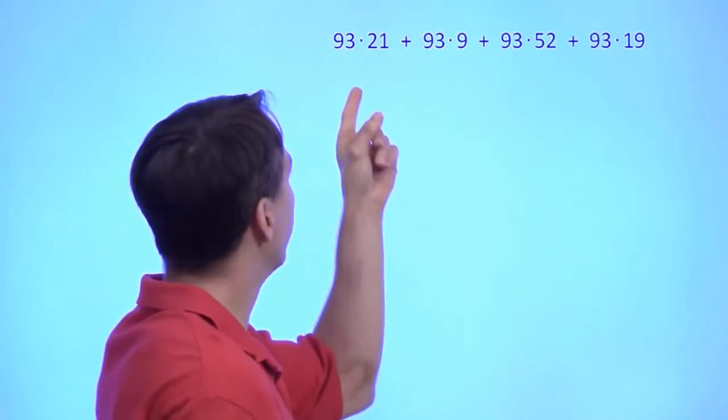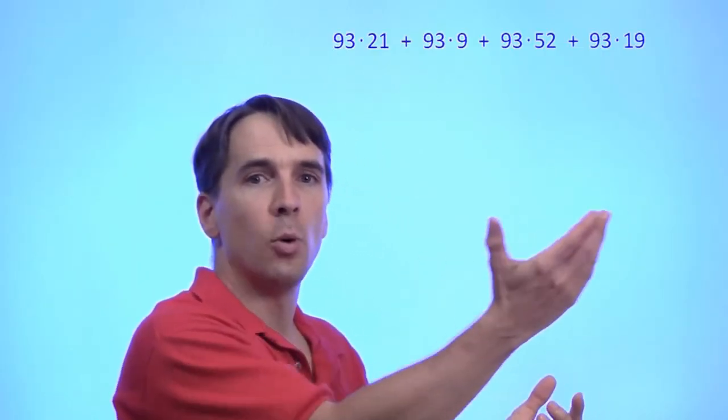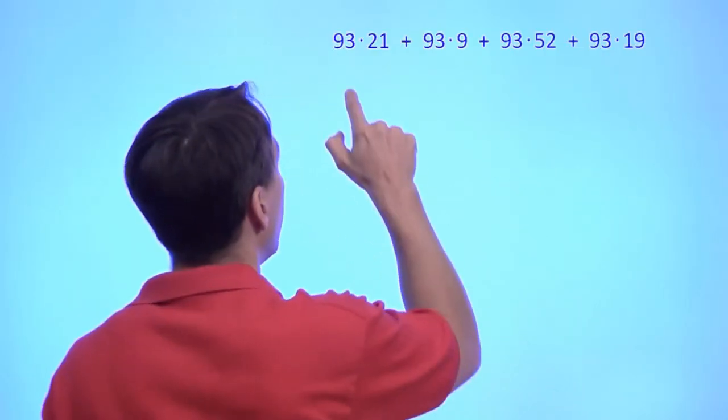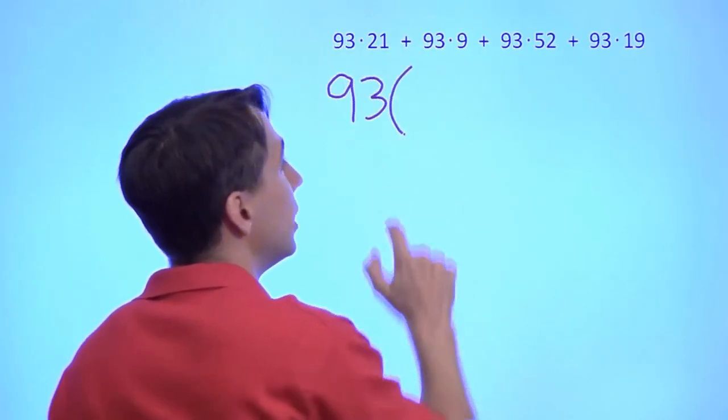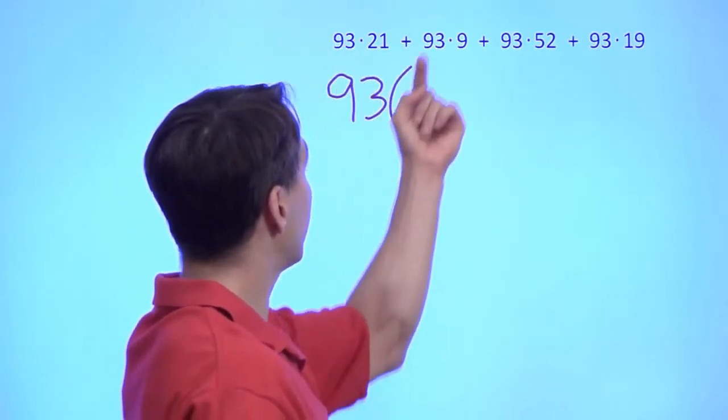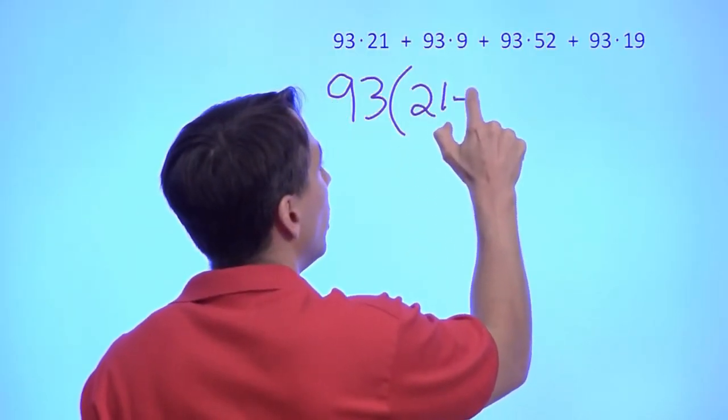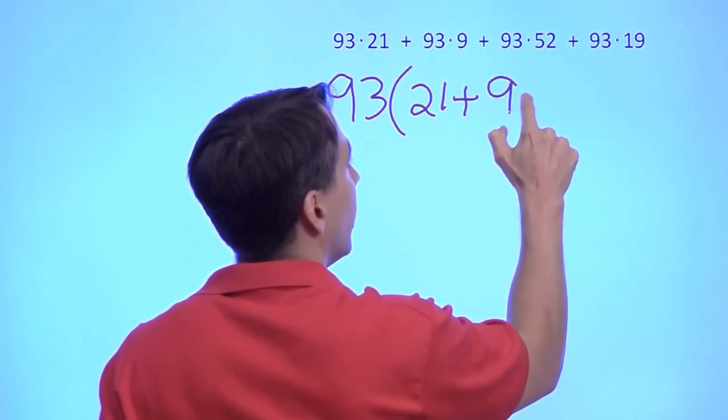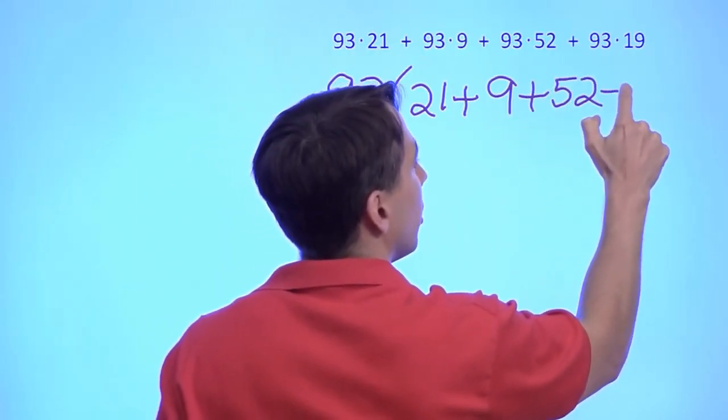But then we see, hold on, there's a 93 in each one of these products. We can use the distributive property. We factor out the 93. And we write this as 93 times the sum. We pull out the factor of 93 from each one of these products, and we're left with 21 plus 9 plus 52 plus 19.